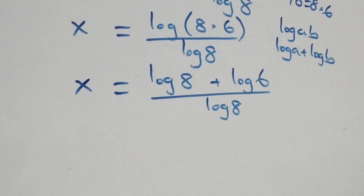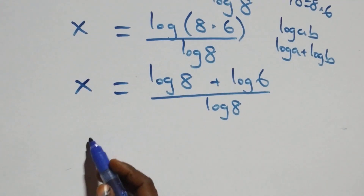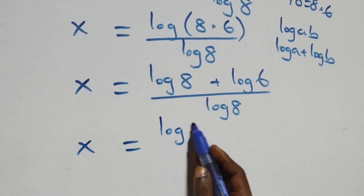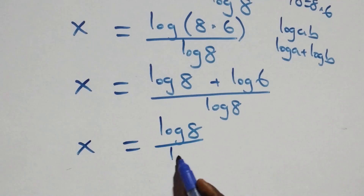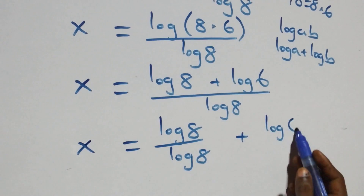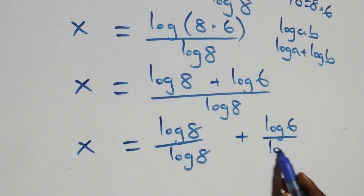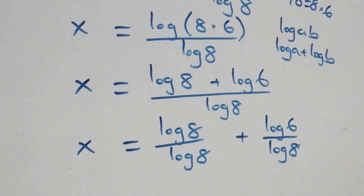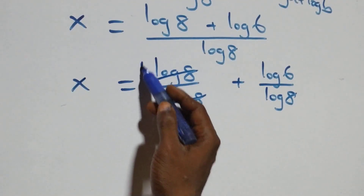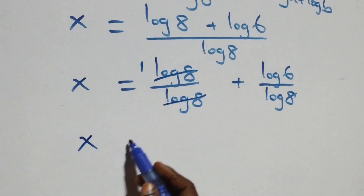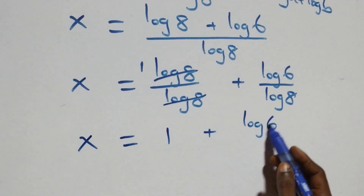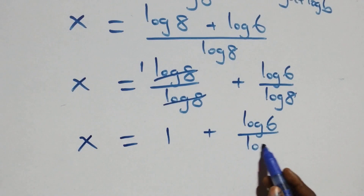Here we separate this into two fractions: x = log 8 over log 8 plus log 6 over log 8. The log 8 terms cancel each other, leaving 1. This implies x = 1 + log 6 over log 8.